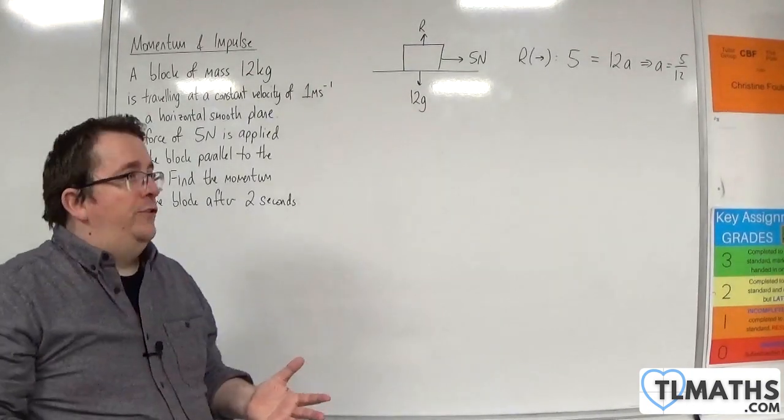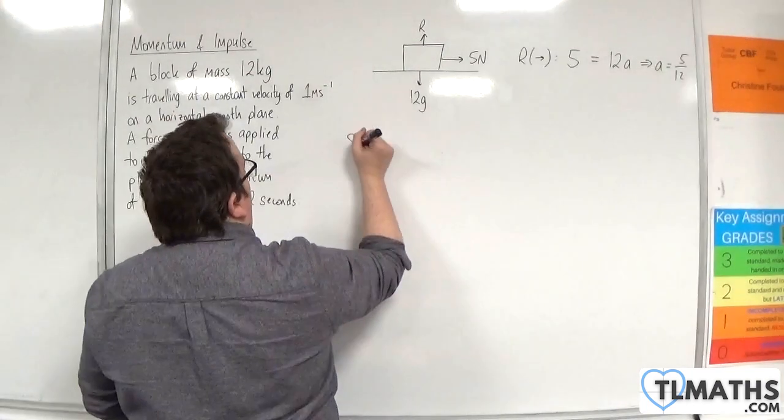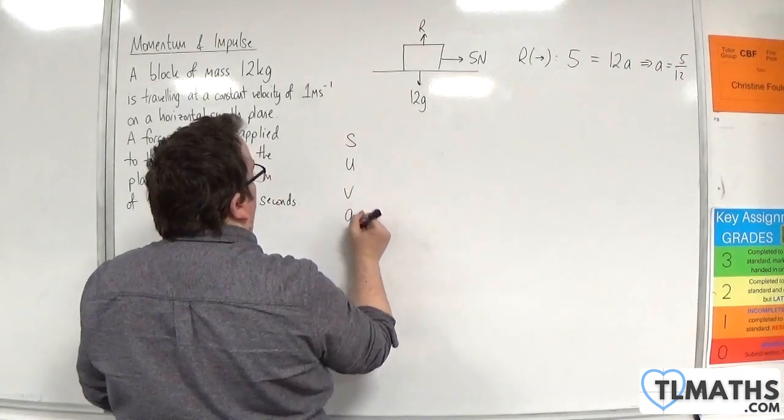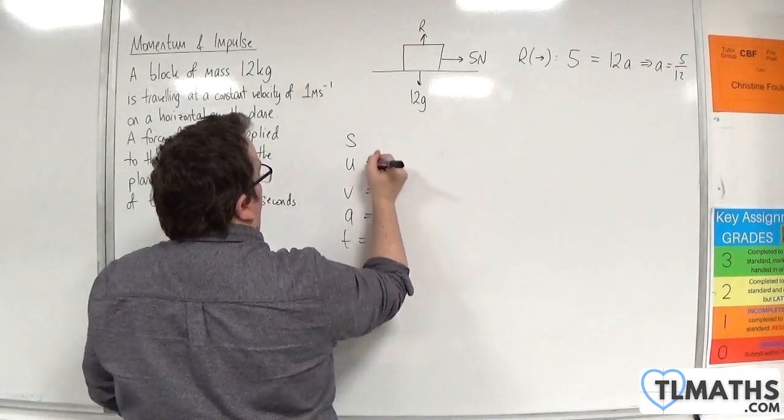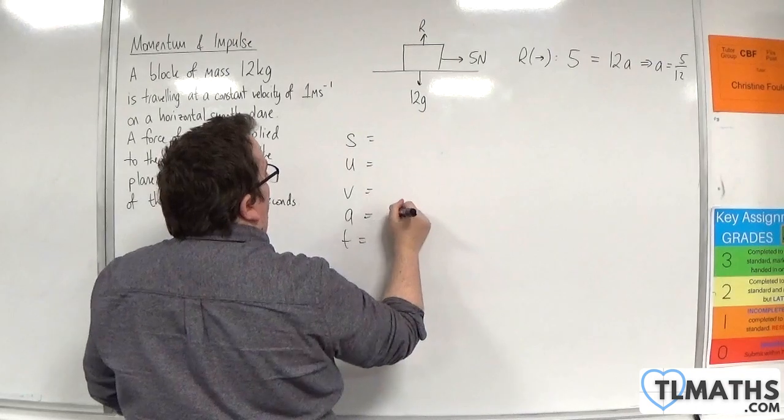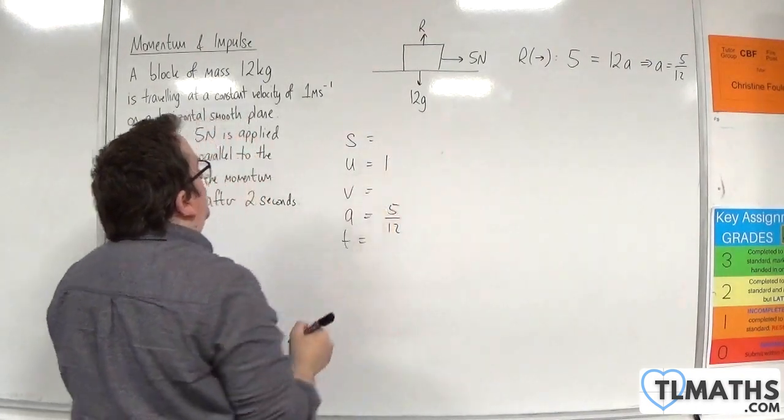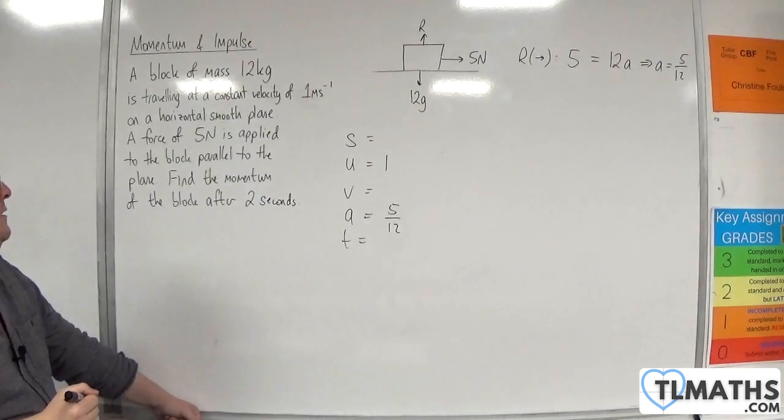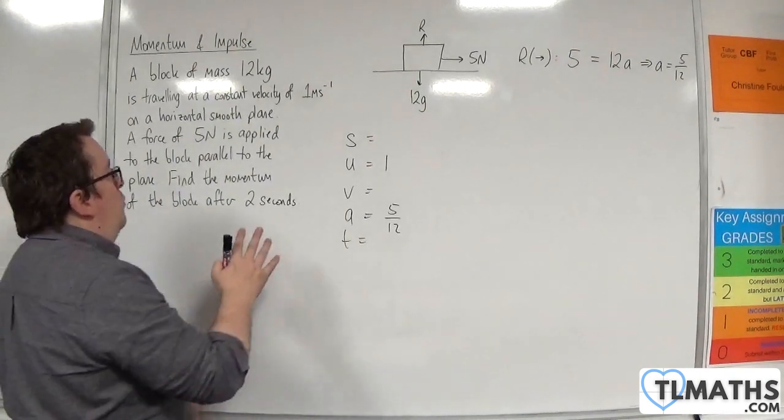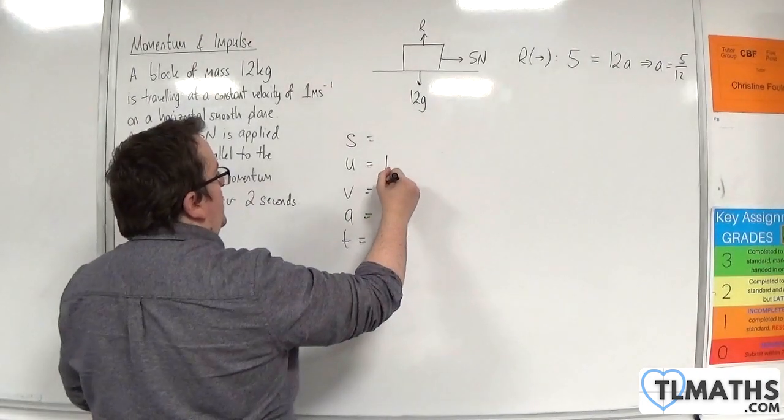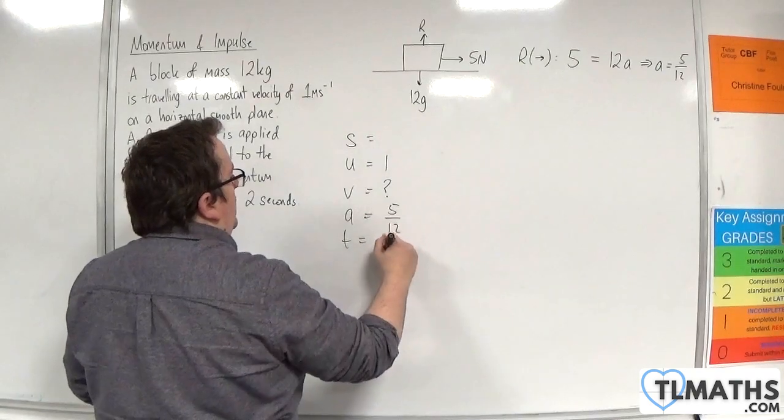So what we can now do is we can utilize the constant acceleration formula. So SUVAT where the acceleration is 5 twelfths, we have an initial velocity of 1 meters per second and we want to work out the momentum. So we need the velocity after 2 seconds.